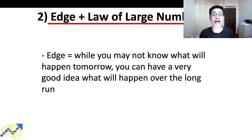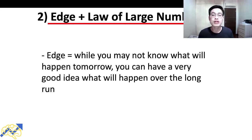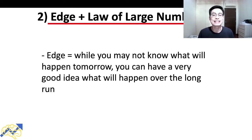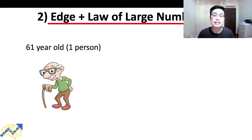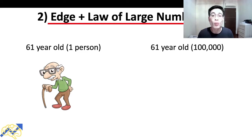The next lesson is edge plus law of large numbers. Edge in the markets means that while you might not know exactly what will happen tomorrow, you can have a very good idea of what will happen over the long run. Not many people understand how edge works — they believe having an edge means predicting whether the market goes up or down in the next days, but edge doesn't work that way. Think of it like predicting how long a 61-year-old person can live — it's not possible to predict for one individual, but we can calculate life expectancy for a large group.